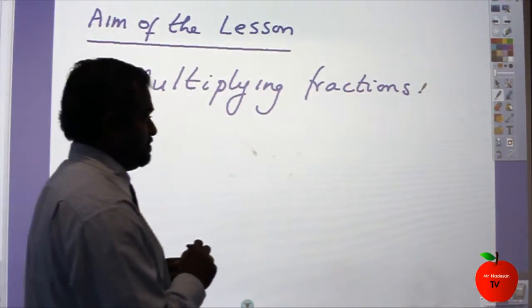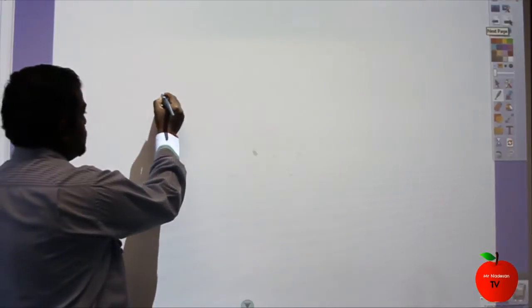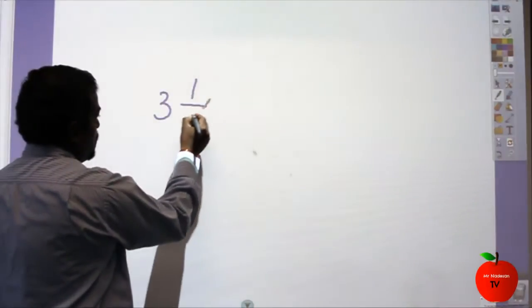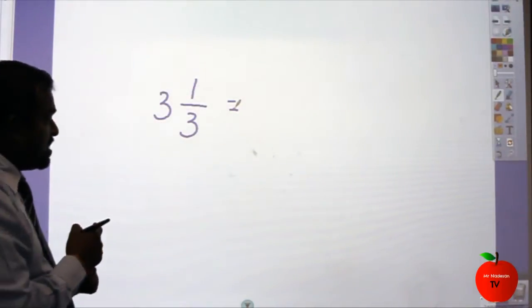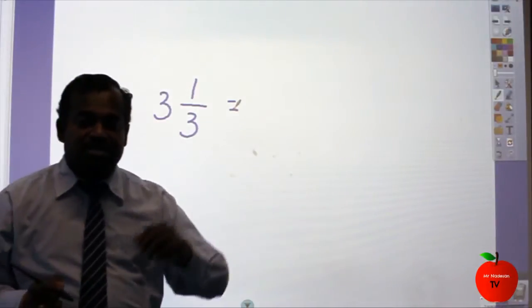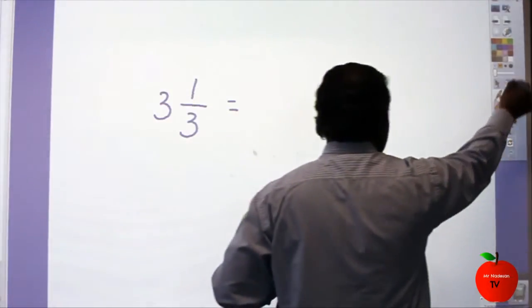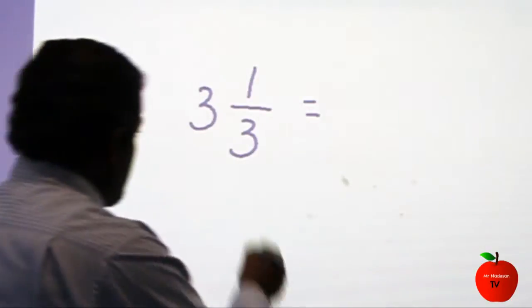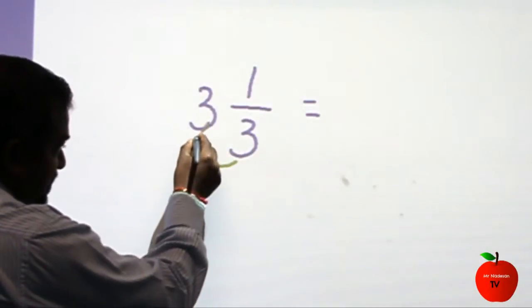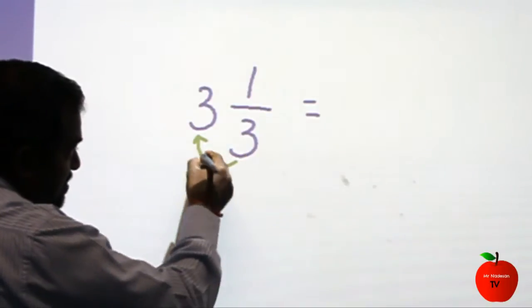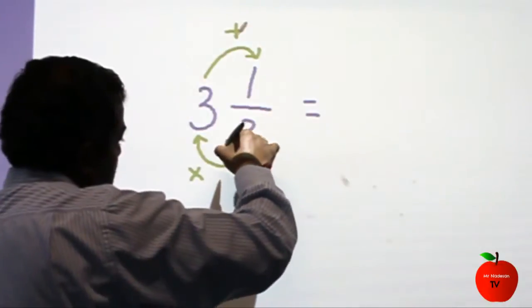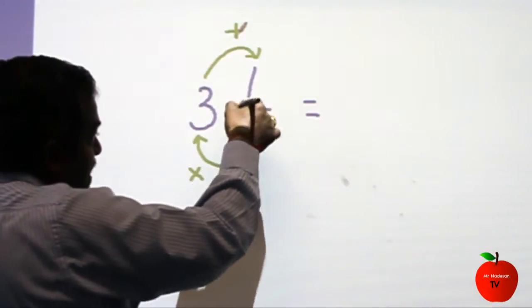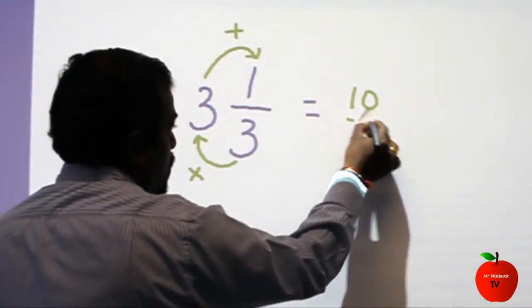Let's see the first one. The first fraction we've got is 3 and 1 over 3. So 3 1/3 is the mixed number. We'll see how to convert it to an improper fraction. You have to multiply the two numbers first — 3 times 3 comes to 9. Then add 1 on the top: 3 times 3 is 9, add 1, that comes to 10 over 3.